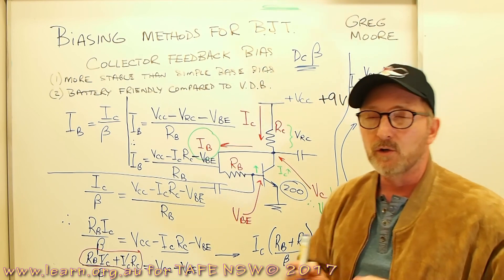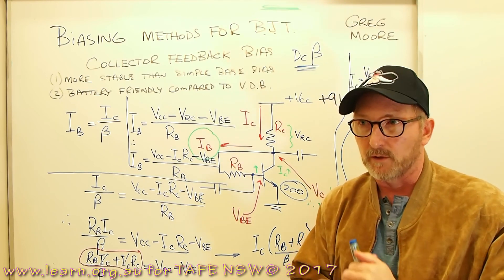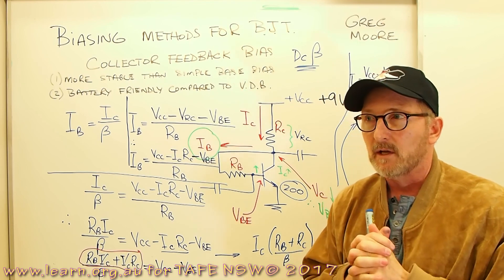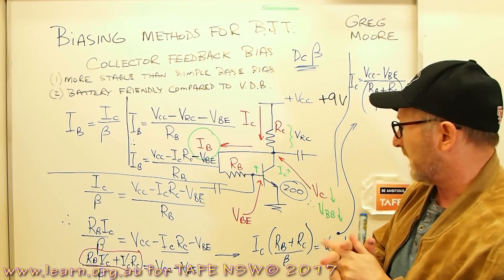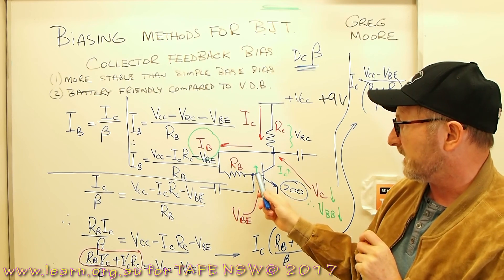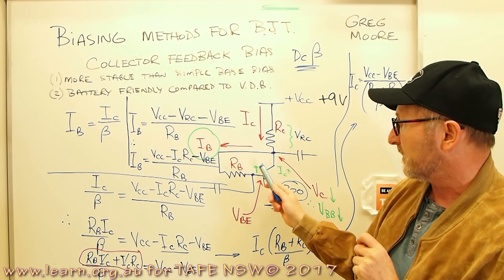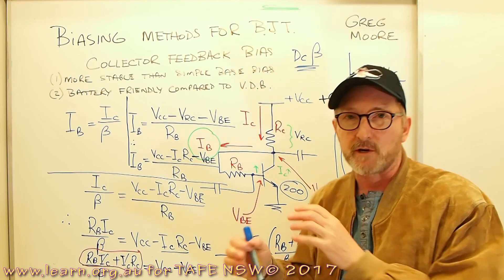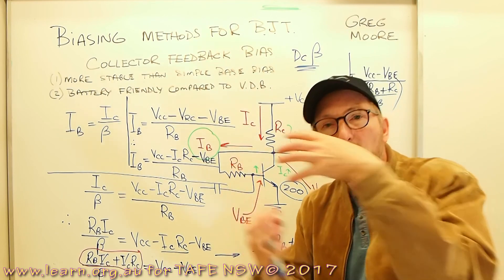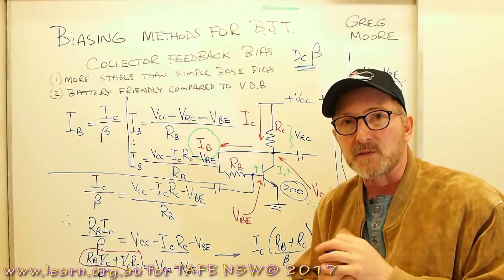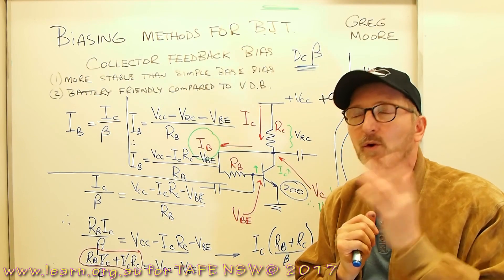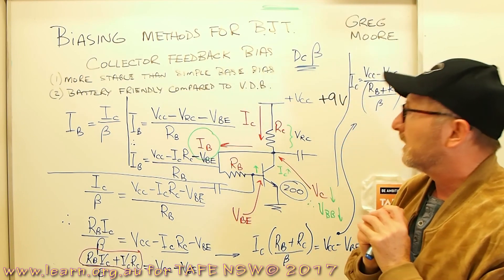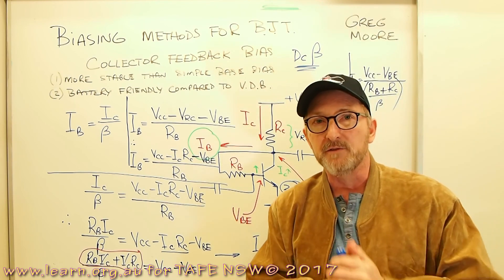We'll have a look at a small lab to do with collector feedback bias, and we'll see this thing in action, and we'll actually see the fact that when the collector current rises, the transistor, the circuit around the transistor compensates for that and pulls things back to where they should be, so we do not get that runaway effect. This has been Greg Moore for TAFE NSW, presenting Collector Feedback Bias as part of biasing methods for BJTs.